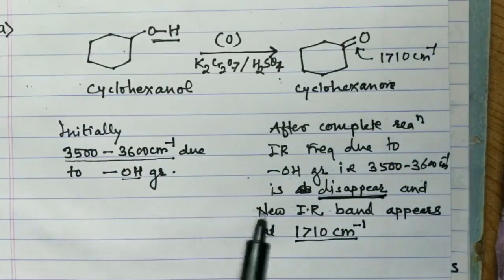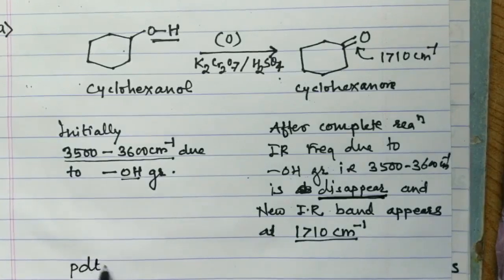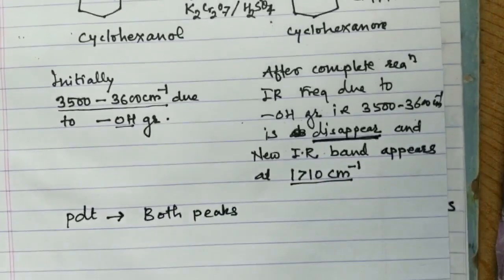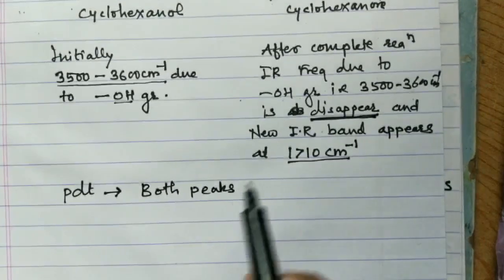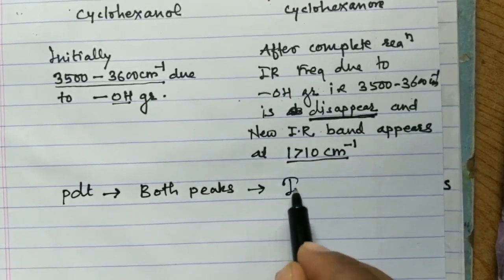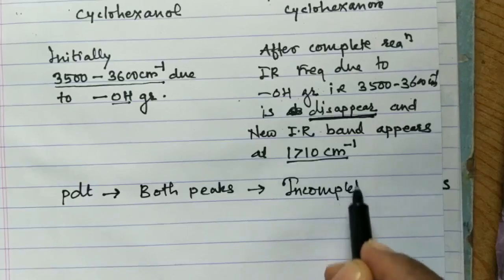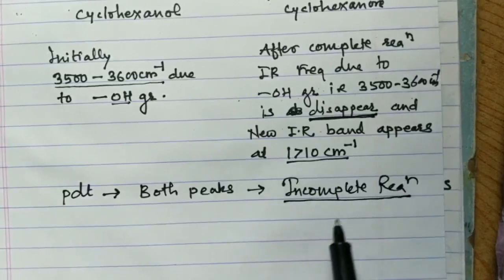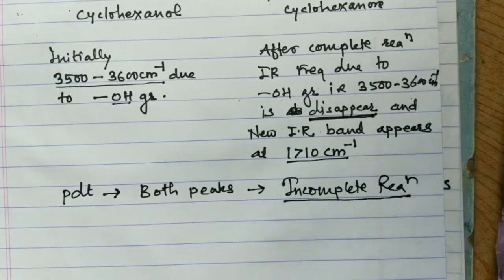If the final product shows both peaks — the OH peak at 3500–3600 cm⁻¹ and the carbonyl peak at 1710 cm⁻¹ — it indicates that the reaction is still incomplete. In this way you can easily follow any reaction by IR spectroscopy.